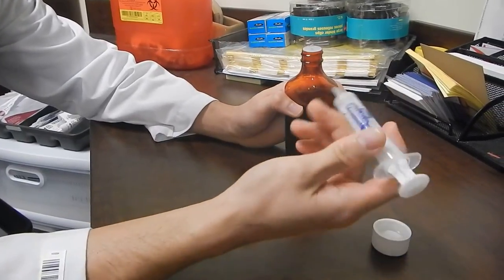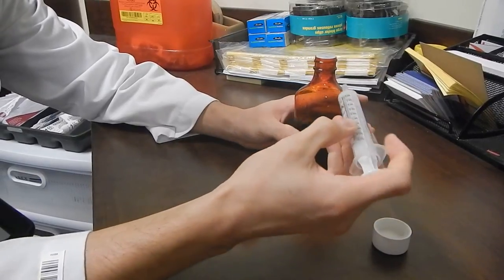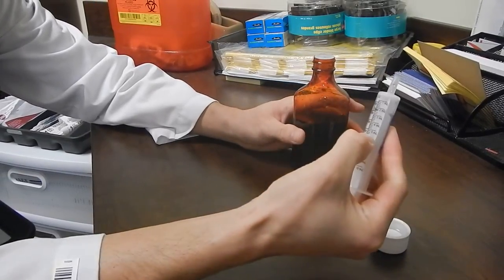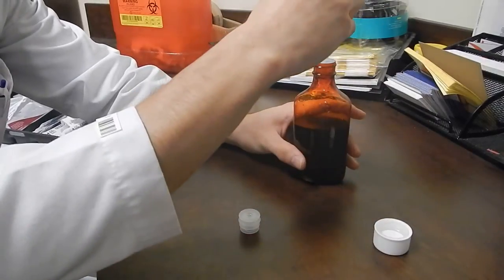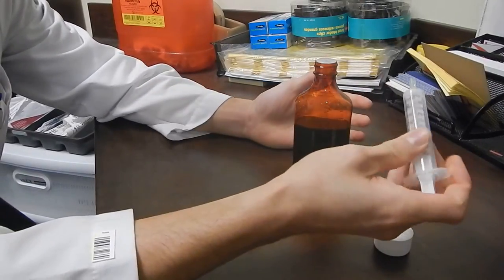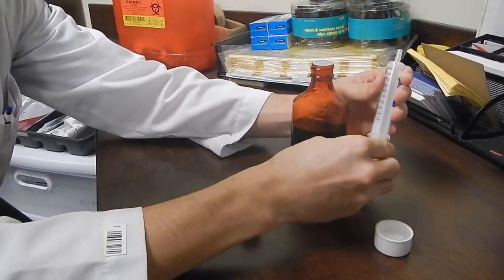And once that's in, to measure out the dosage you need, let's say for example you needed five milliliters, first make sure the syringe is pushed all the way to the top.